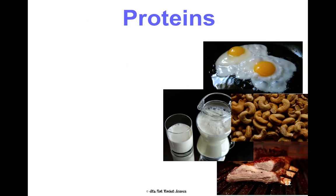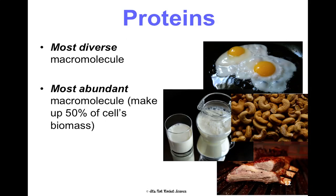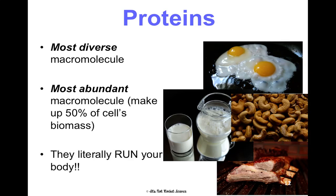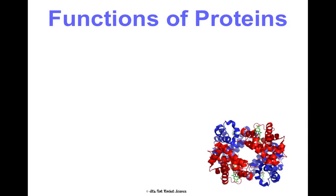Let's talk about proteins. This is the most diverse macromolecule and also the most abundant — about 50% of your cells are made up of proteins, which is incredible. They literally run your body. I want you to get out of your head that proteins are only used for muscles, because that is not true. They're used for so many things, which we'll talk about now. I'm going to give you a bunch of functions of proteins because there are so many and you need to know them all.